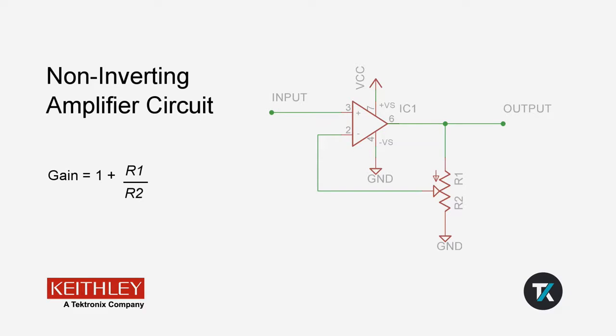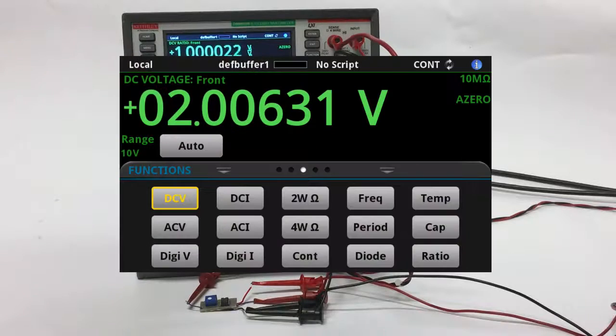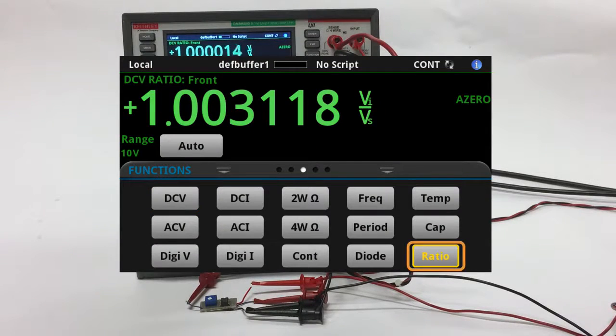I will now demonstrate how this measurement is made. First, access the function by pressing the ratio button on the DMM.